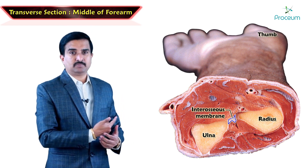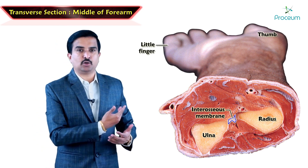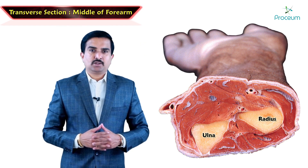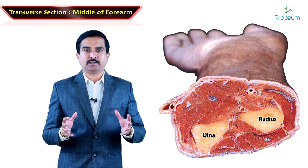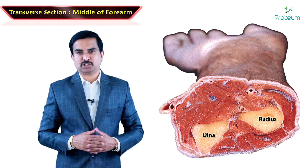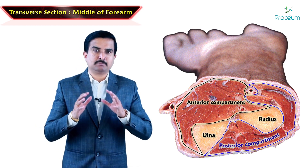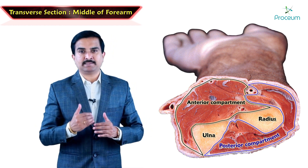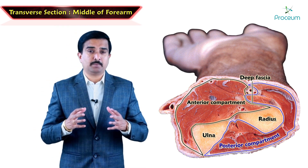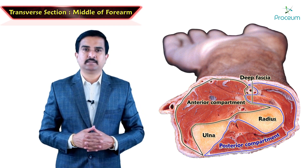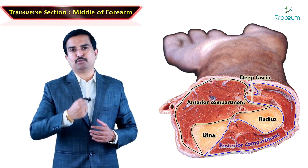The thumb represents the lateral aspect and the little finger is on the medial aspect. To understand the anatomy well, you should know that the forearm is divided into two compartments: anterior compartment and the posterior compartment. These compartments are formed by septa which are derived from deep fascia. Because of the presence of numerous muscles, the anterior compartment of the forearm is bulkier than the posterior compartment.